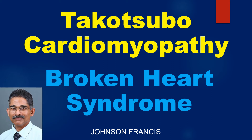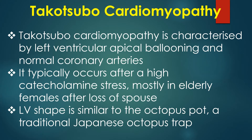This is a discussion on Broken Heart Syndrome, or Takotsubo cardiomyopathy. Takotsubo cardiomyopathy is characterized by left ventricular apical ballooning and normal coronary arteries. It typically occurs after a high catecholamine stress, mostly in elderly females, after loss of a spouse. The LV shape is similar to the octopus pot, a traditional Japanese octopus trap.